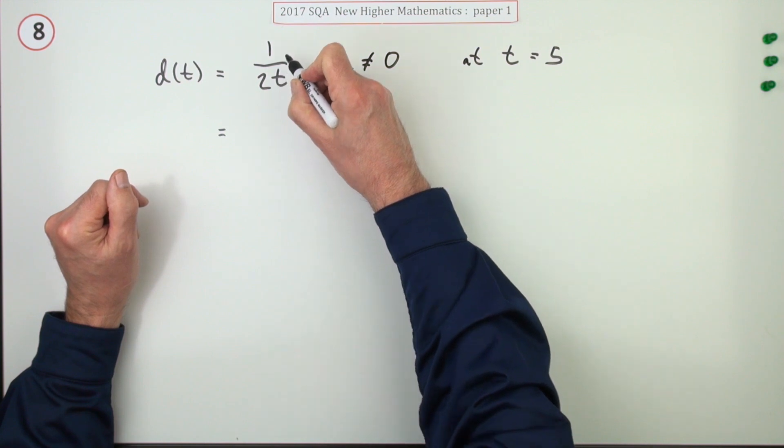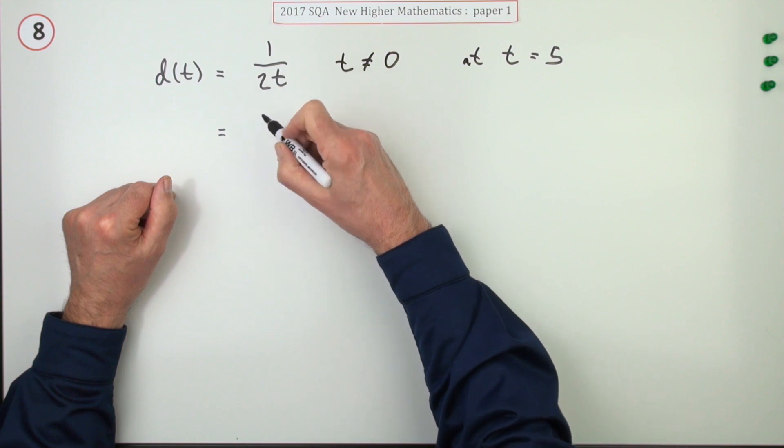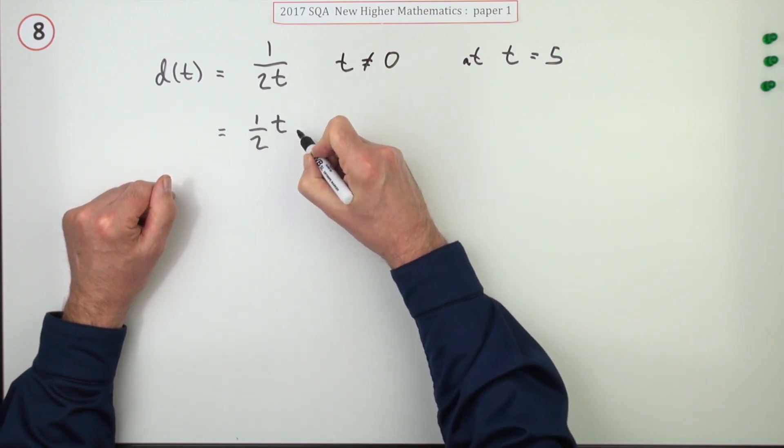Get the variable up on top in index form. Just the variable, not the two - nothing wrong with that two being down below. So I'll leave the two below. The t goes on top and it'll be power negative one.